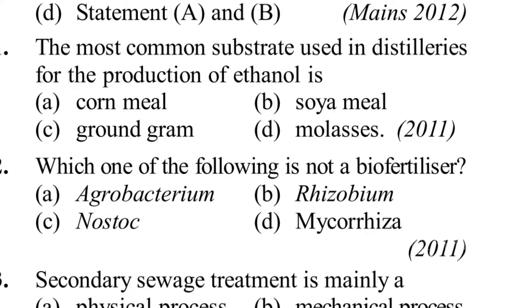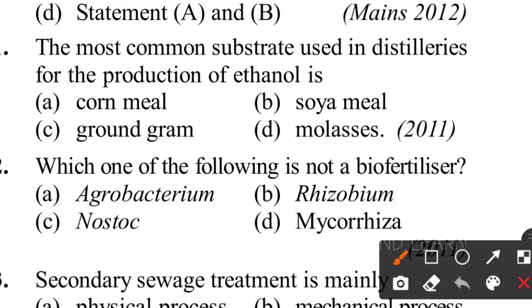Twenty-second question: which of the following is not a bio-fertilizer? Nostoc, Mycorrhizae, and Rhizobium are all organisms used as bio-fertilizers. Option A - Agrobacterium - is a pathogen of several dicot plants and causes tumor in the plant, so it is not a bio-fertilizer. Option A is the correct answer.